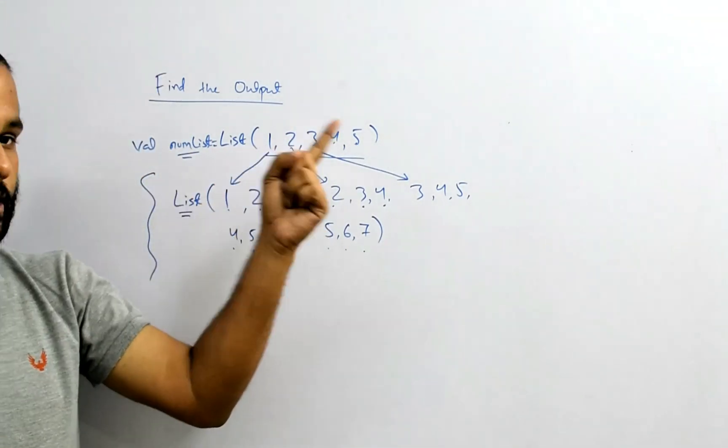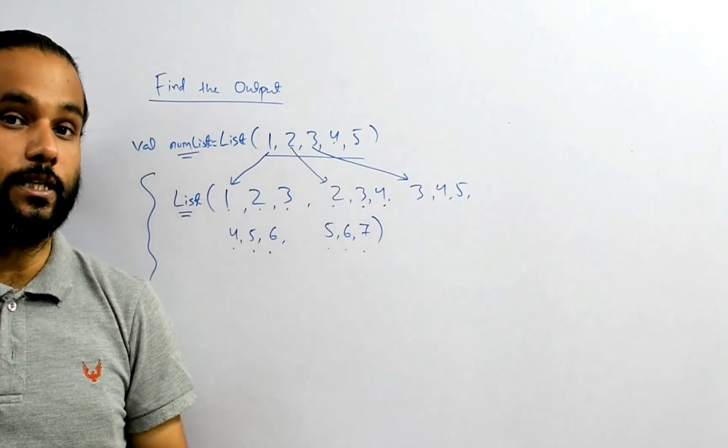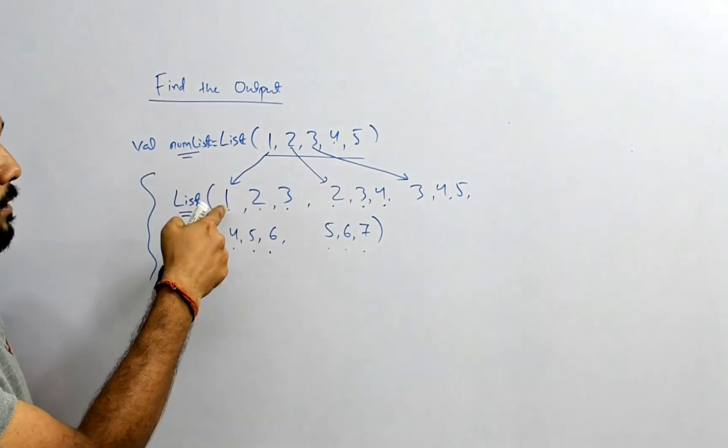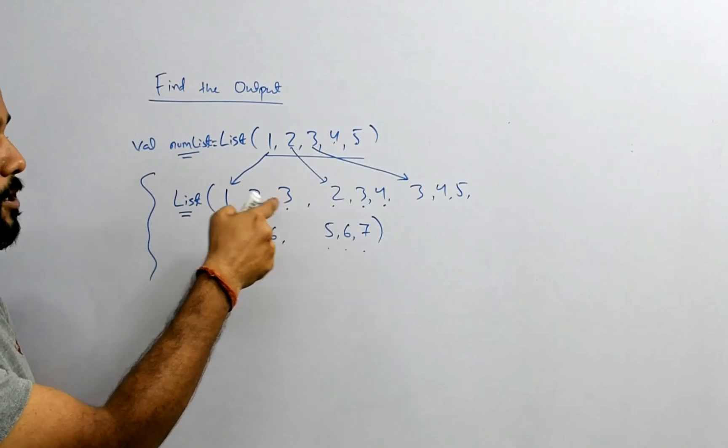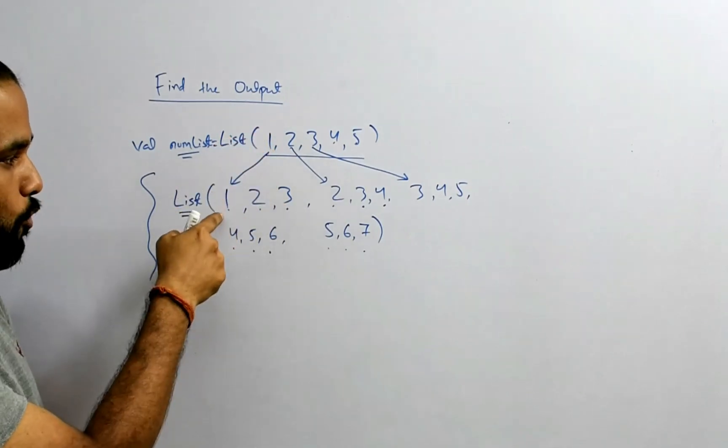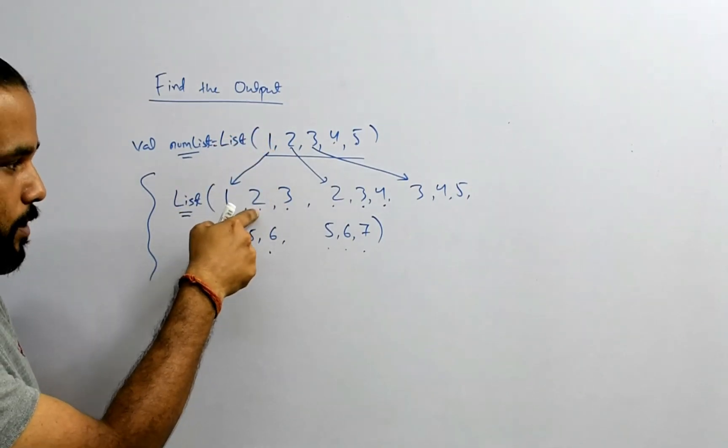So it's very simple. For each number in such list, what I want you to produce is that number, that number plus one, and that number plus two. So for 1 it is 1, 1 plus 1, and 1 plus 2.